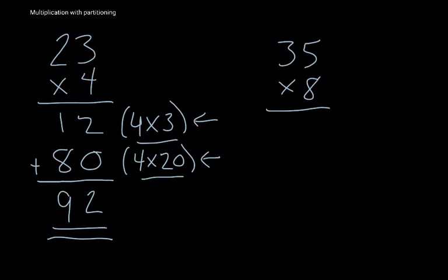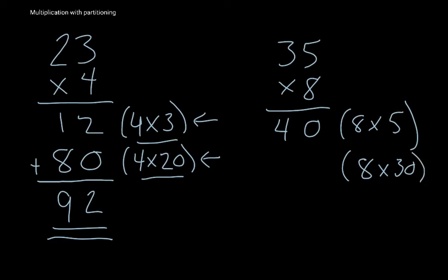So let's have a look at this one now. 8 times 5 is 40. And now I'm looking at 8 times 30, which is going to be, well I know that 3 times 8 is 24, so it's going to be 240.